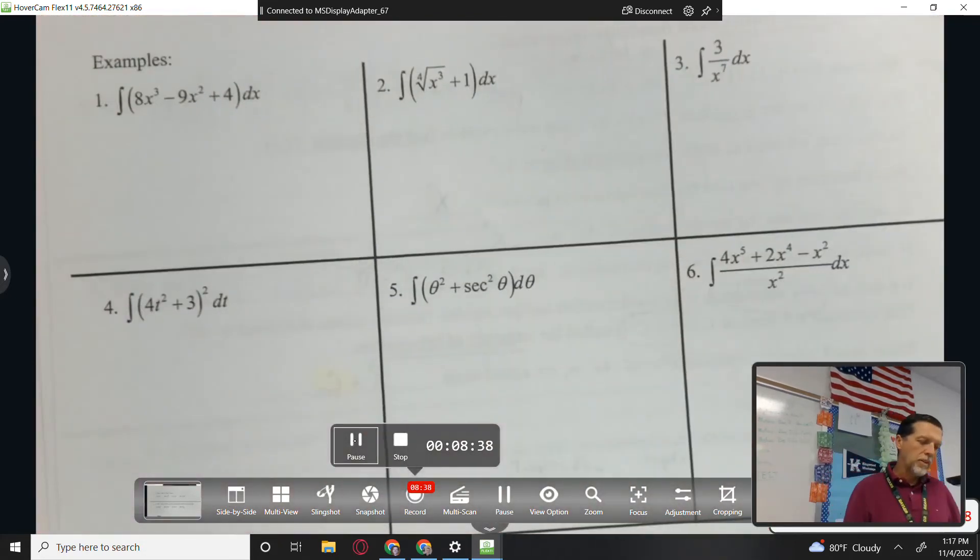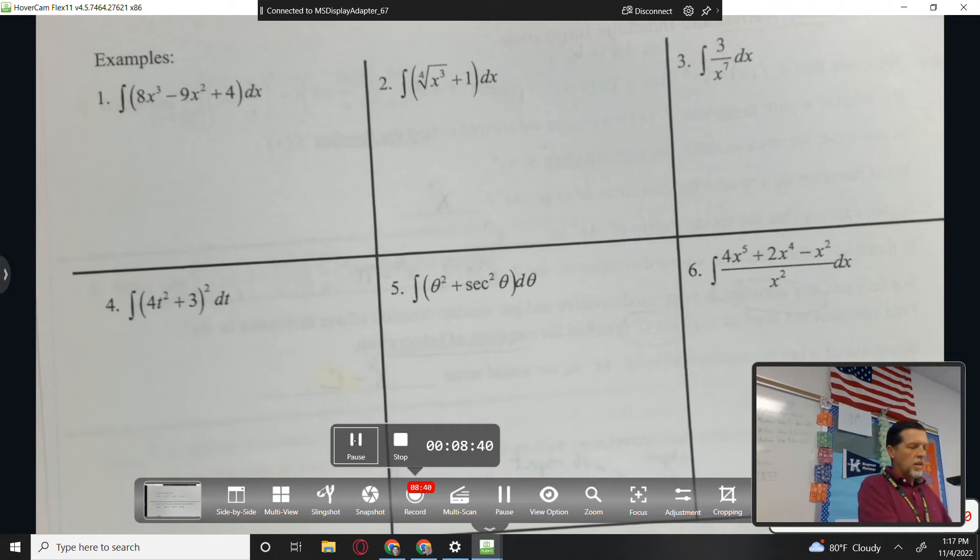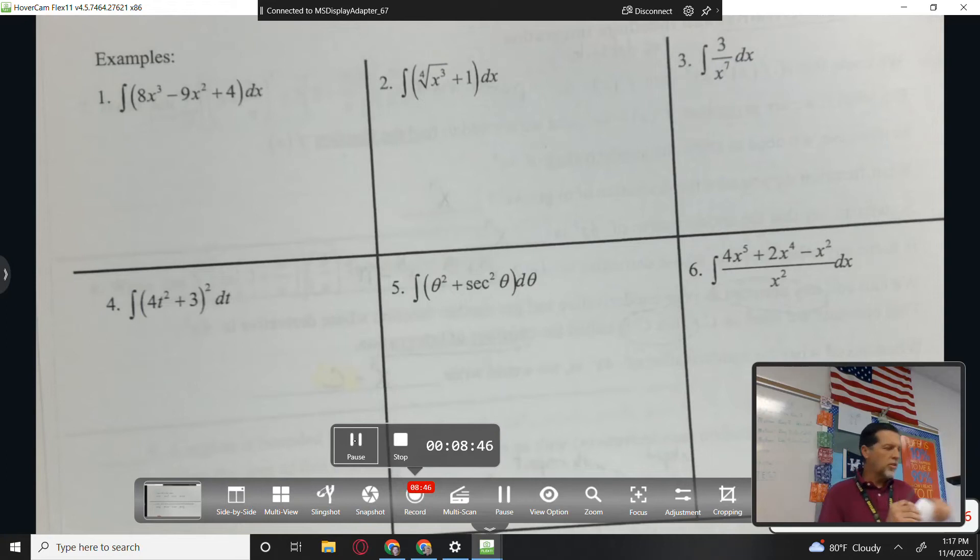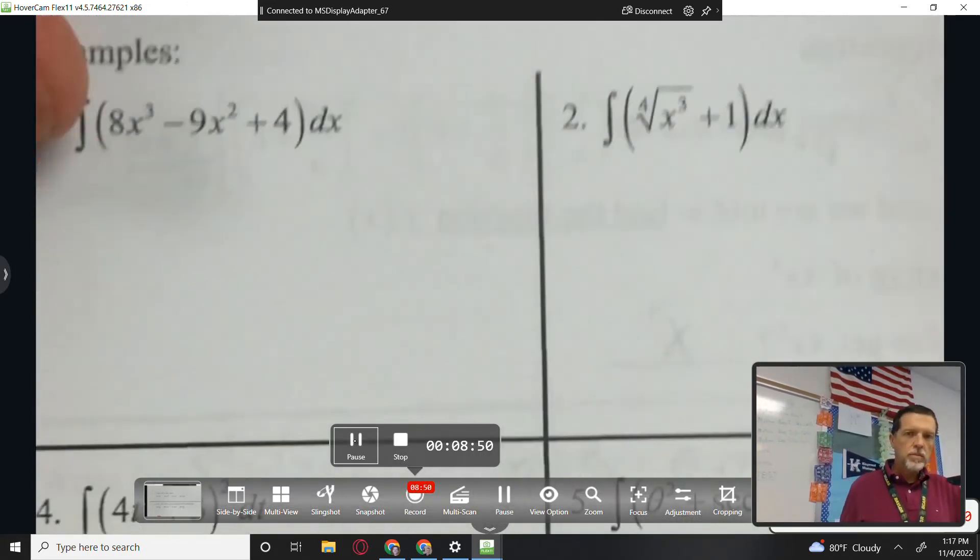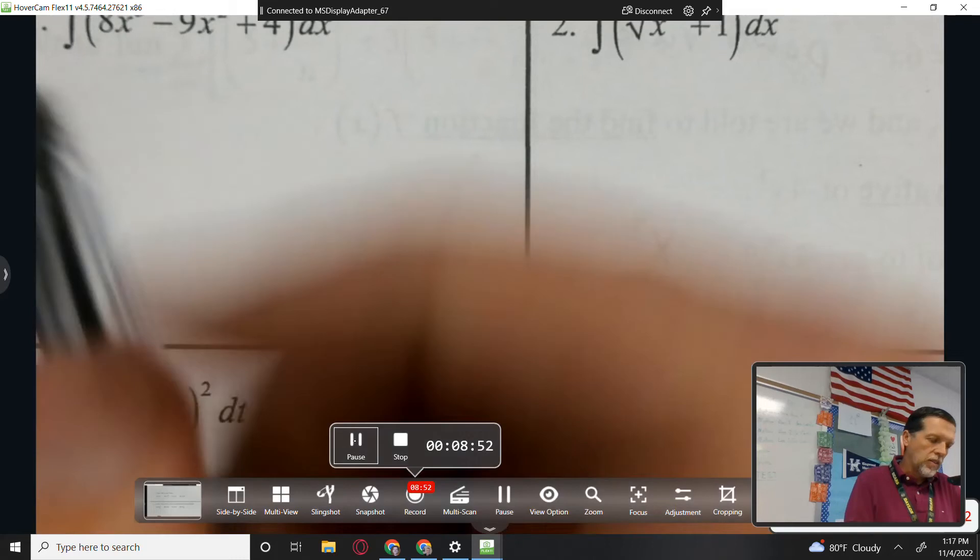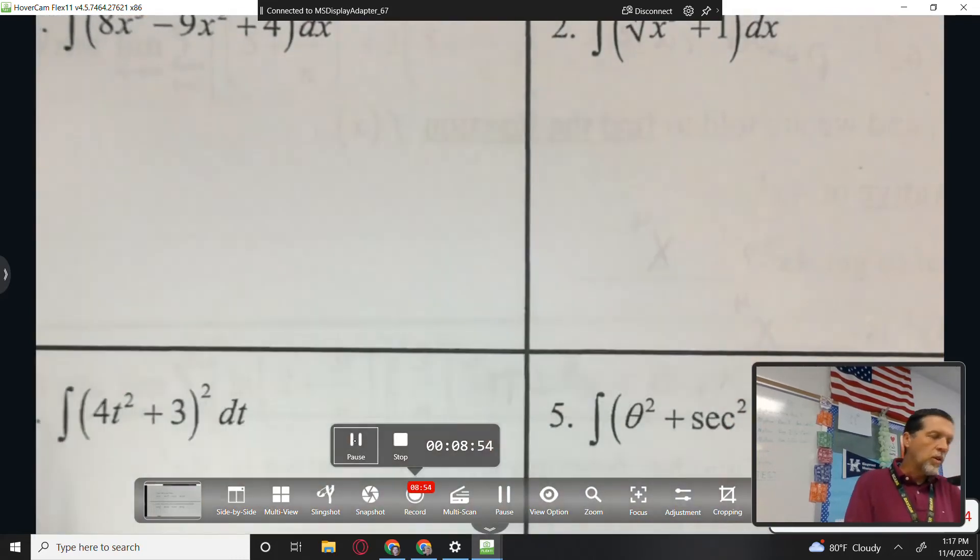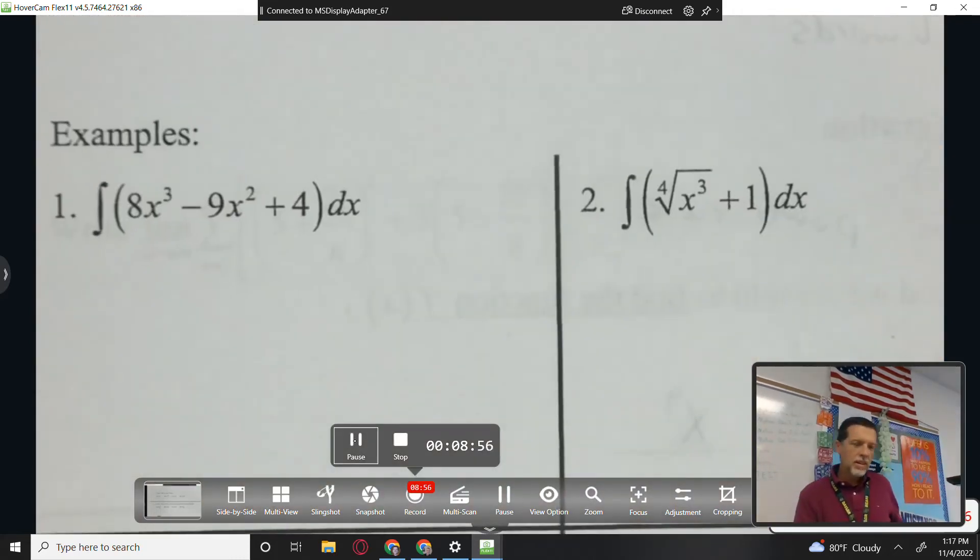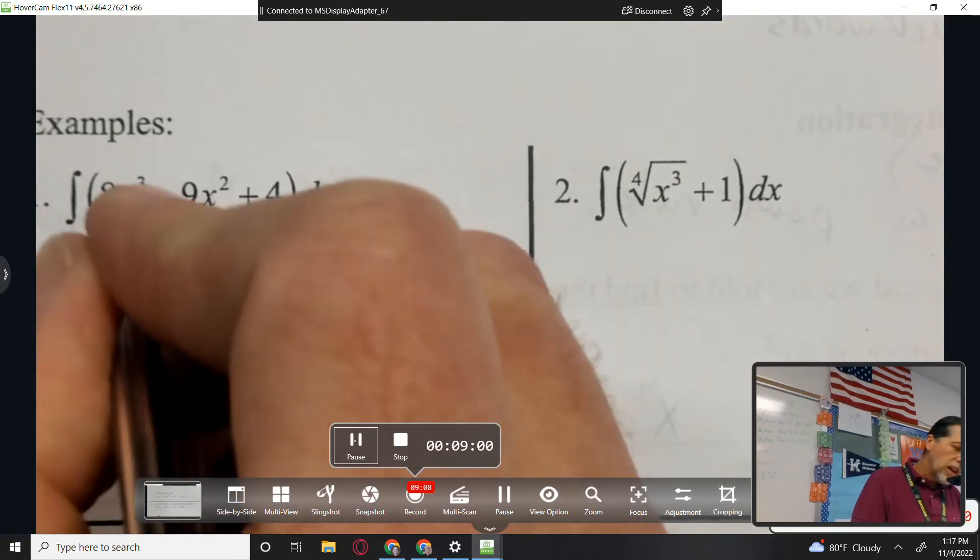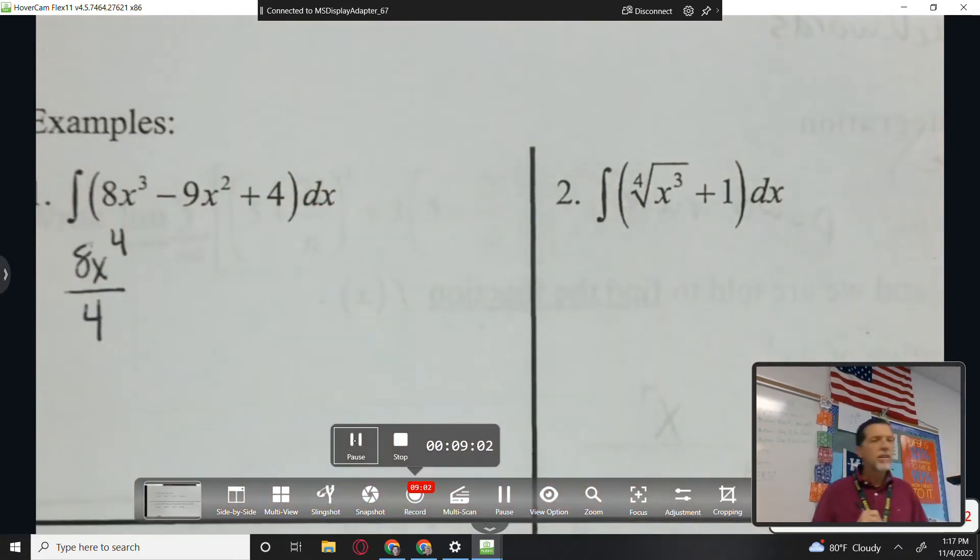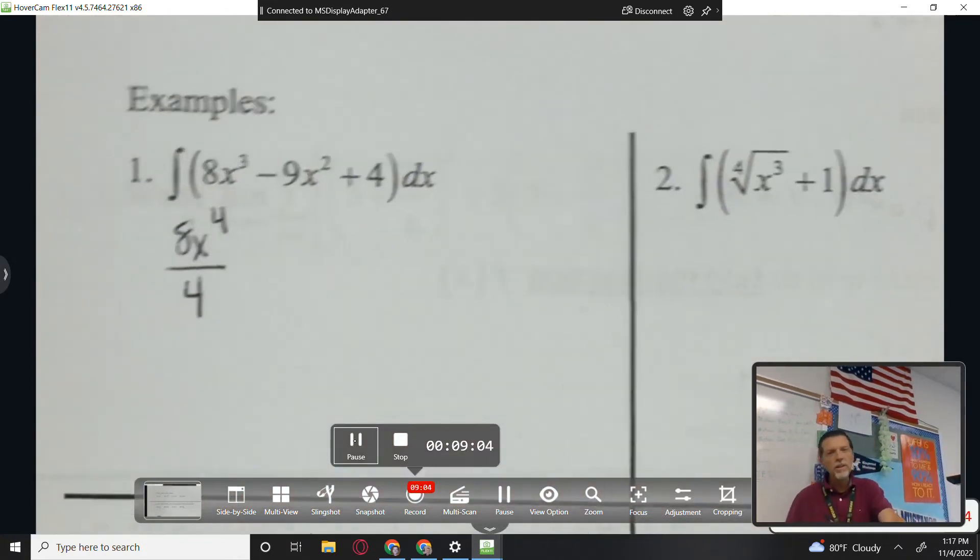All right, some practice problems here. Number one. We've squeezed a bunch into one problem, basically. Let's see. So 8x cubed. So up the power by one. So that's 8x to the fourth and divide by the new power. Increase the power by one, divide by the new power.